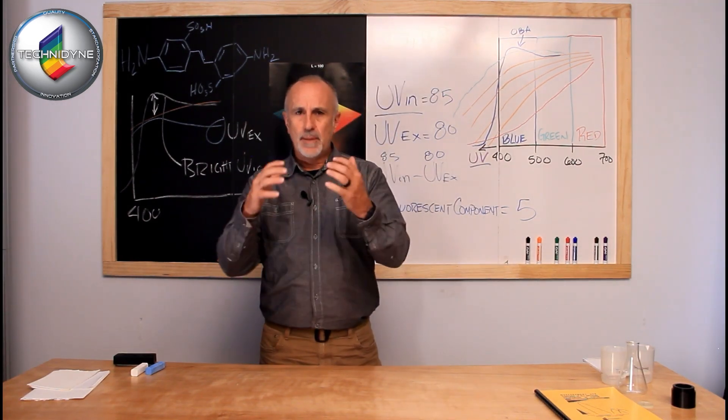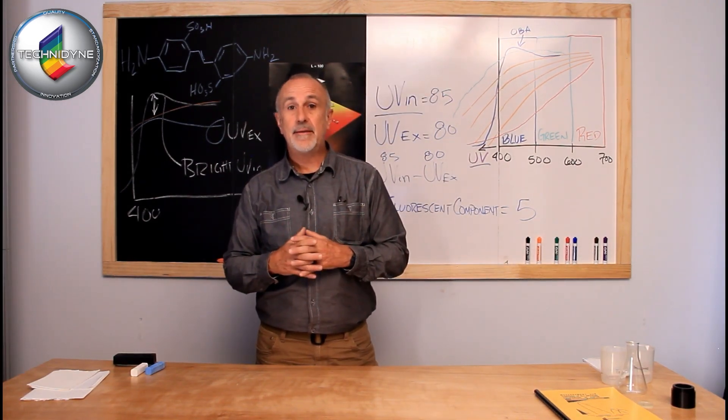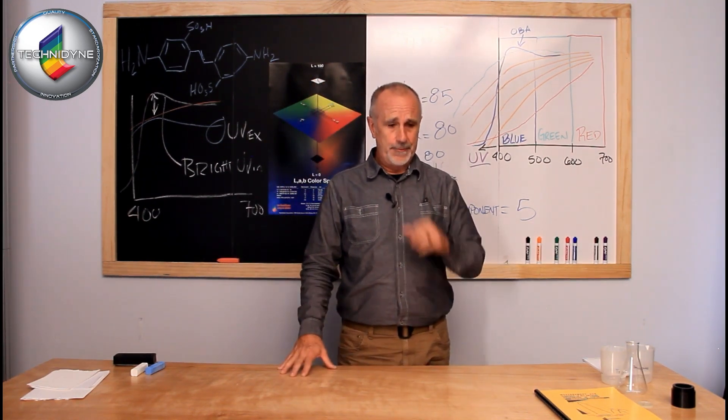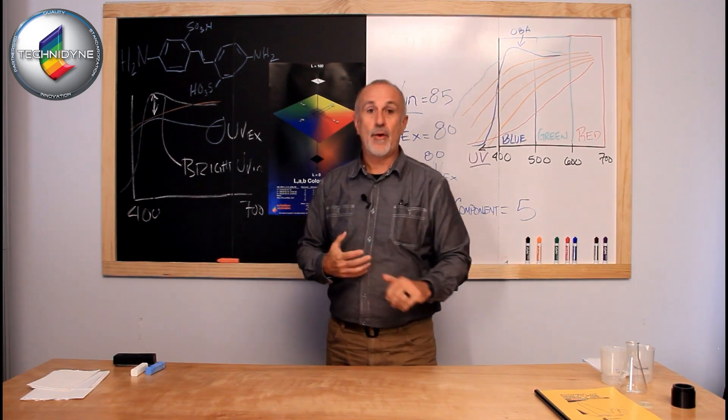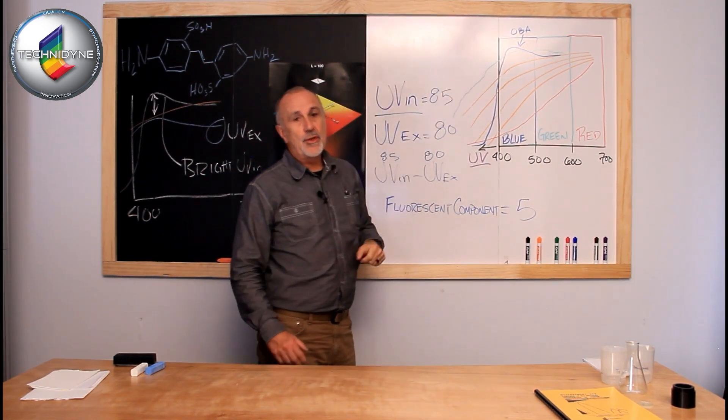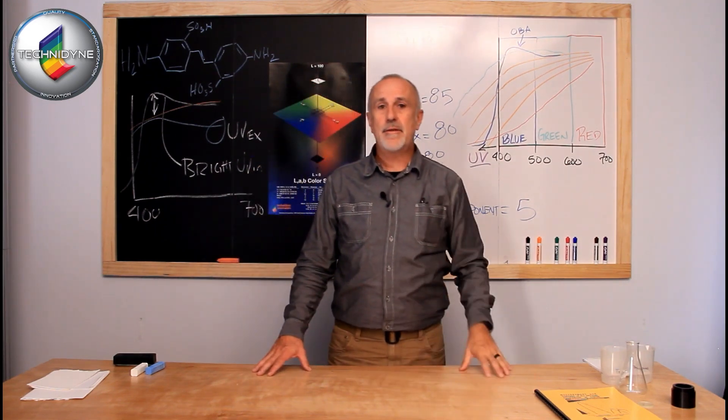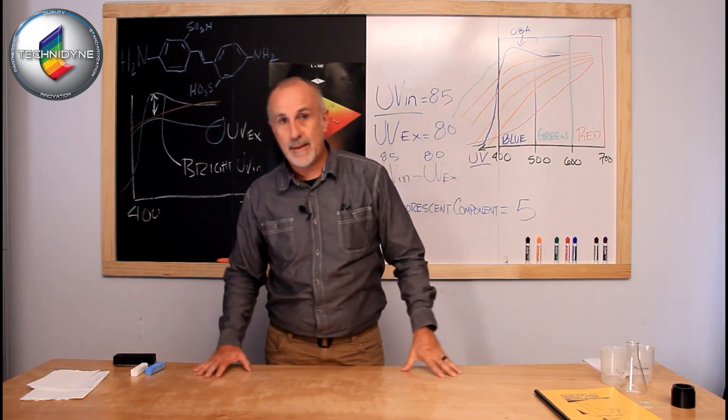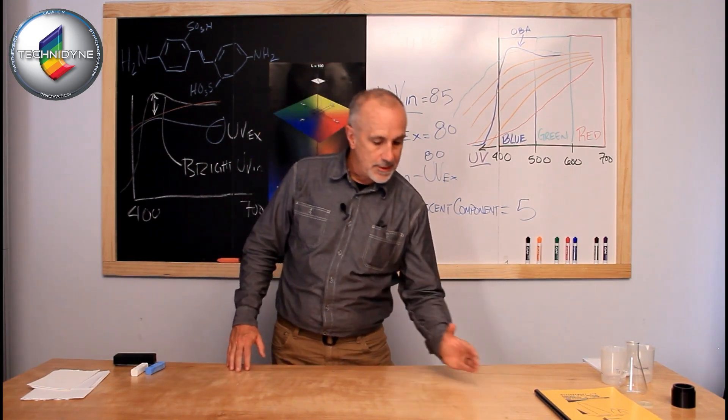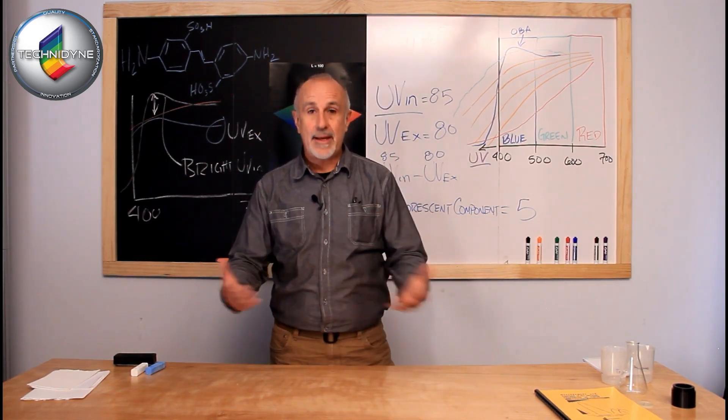Kaolin as well will absorb some ultraviolet energy, not near as much as the TiO2. Calcium carbonate actually is not too bad at all in the ultraviolet region of the spectrum, so you don't want to be as concerned with that. But you need to be conscious of those things as you're formulating your product, that if you're using OBAs and if you're using these fillers, how do they interact with one another.